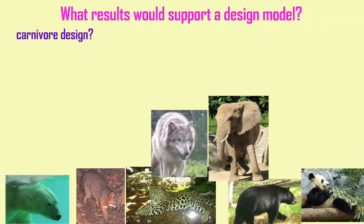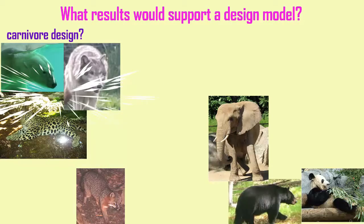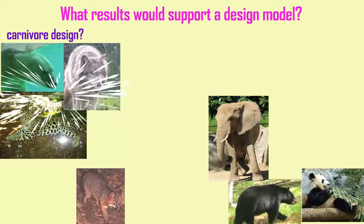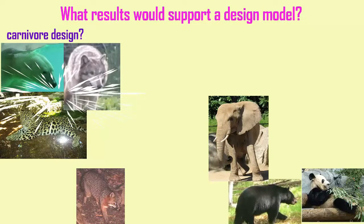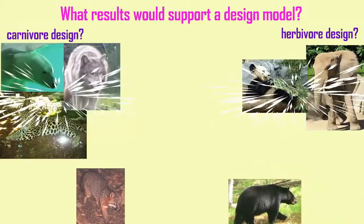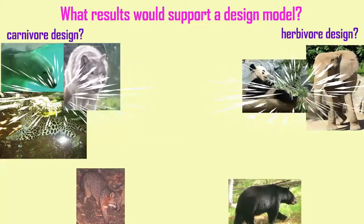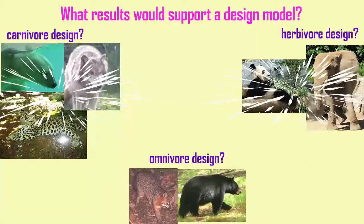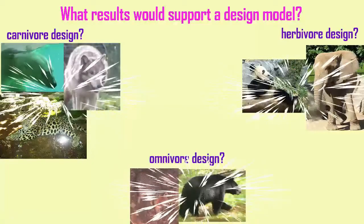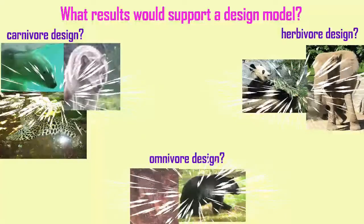Some intelligent design advocates have said that if there are similarities, maybe it represents a common design for the same diet. That could be easily tested. In this model, herbivores would have similarities because those similarities are based on their common diet, compared to carnivores, which would have a completely different set of similarities or sequences.